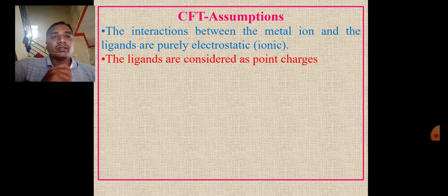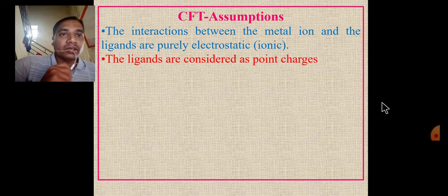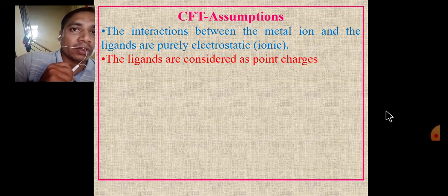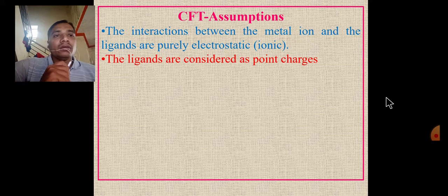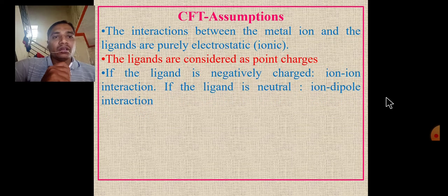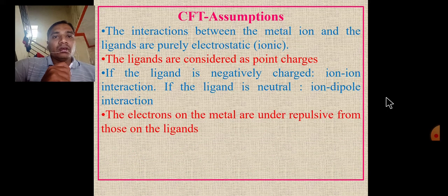In a metal-ligand complex, the metal ion acts as a Lewis acid and the ligand acts as a Lewis base. There are two types of interactions: when the metal is positive and the ligand is negative, there is ion-ion interaction; and when the ligand is neutral, there is ion-dipole interaction.